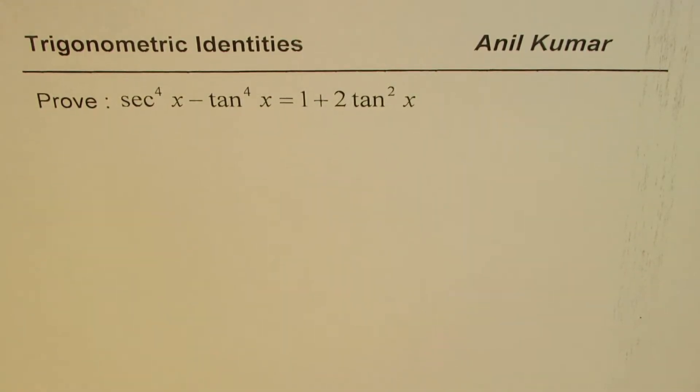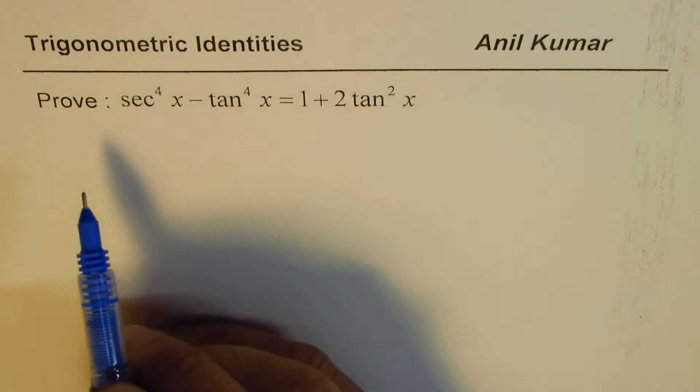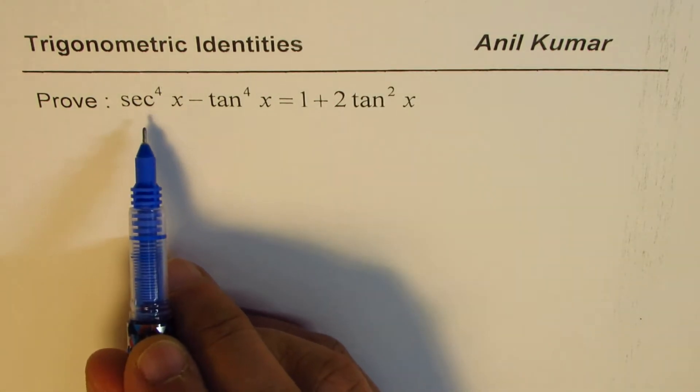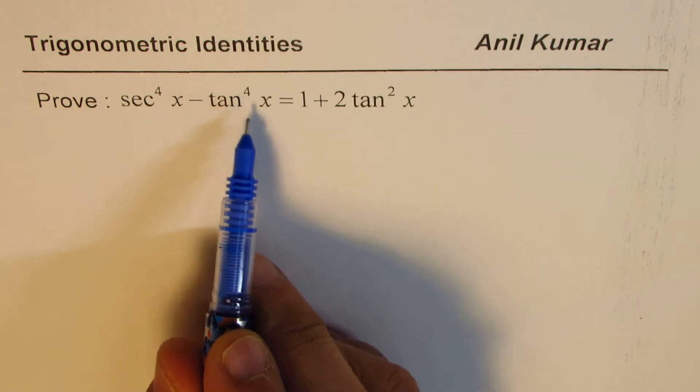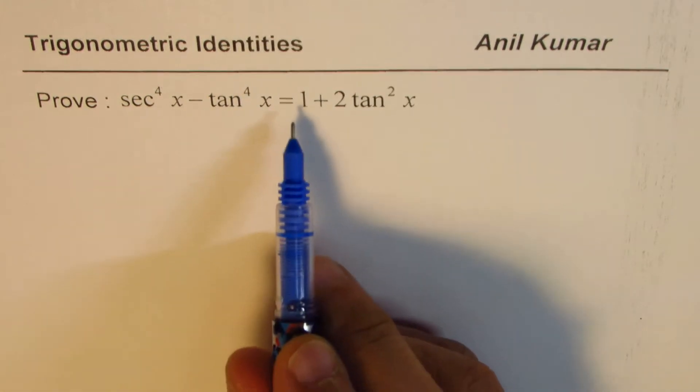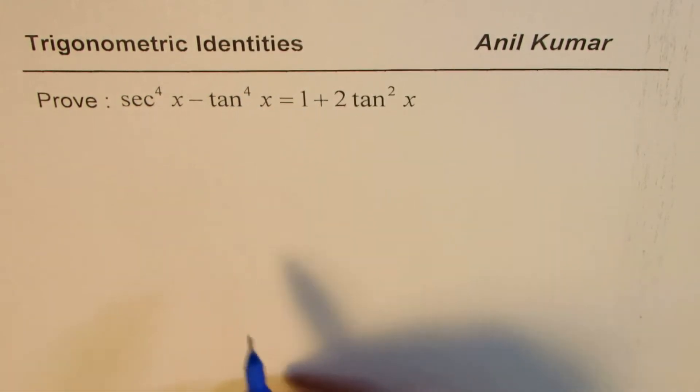I'm Anil Kumar and in this video we'll do trigonometric identities which involve powers of tan and secant. The question here is to prove secant to the power of 4x minus tan to the power of 4x equals 1 plus 2 tan square x.